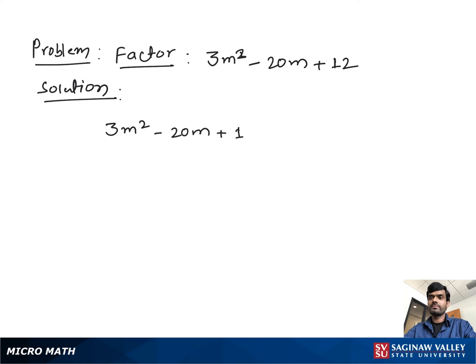We multiply the coefficient of m square 3 with constant 12. We get positive 36. We have some factor of 36. Now we find a pair of numbers which we multiply gives us positive 36 and addition gives us negative 20.